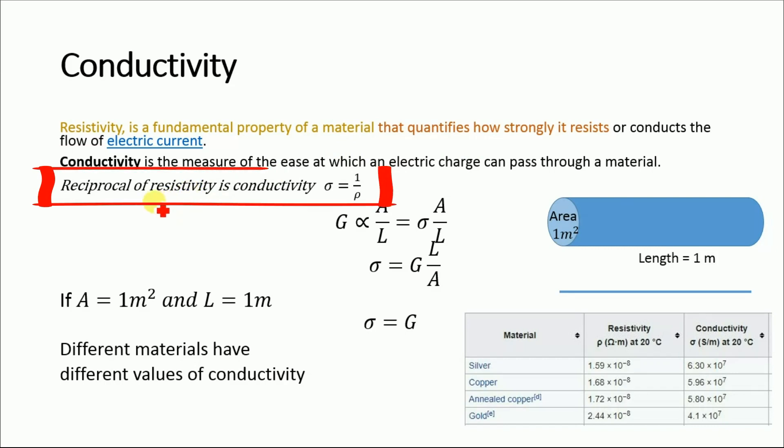Or in other words, the reciprocal of resistivity is conductivity. Conductivity sigma equals 1 over rho, where rho is resistivity and sigma is conductivity.